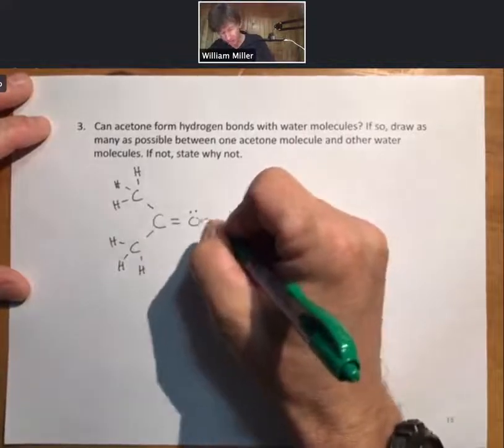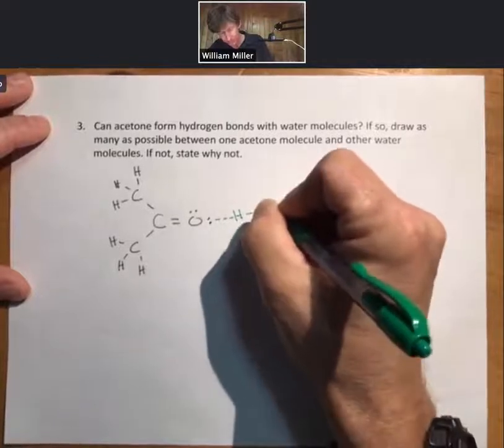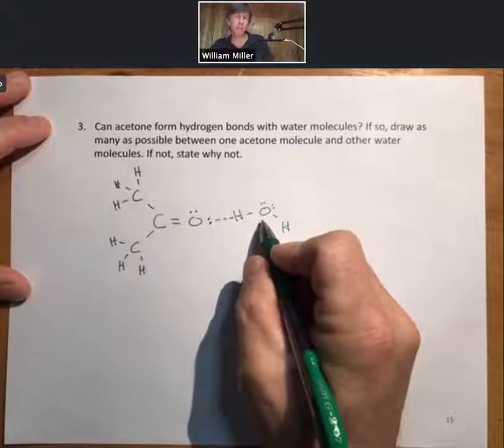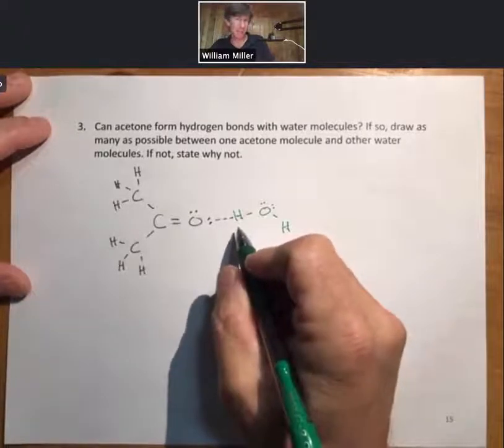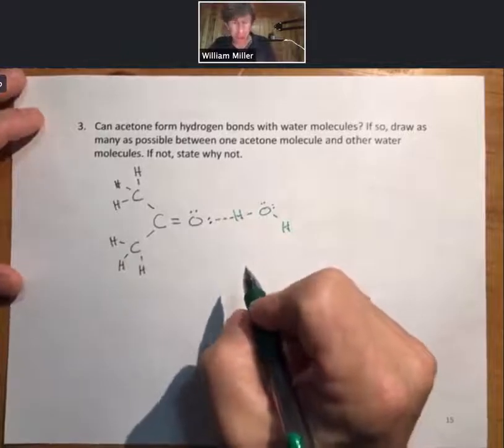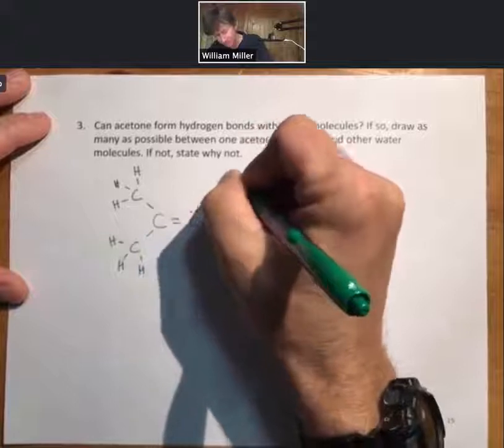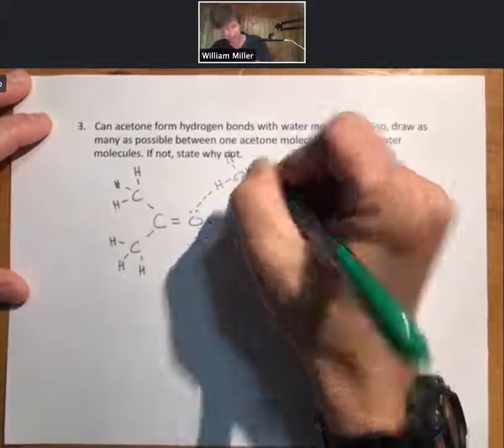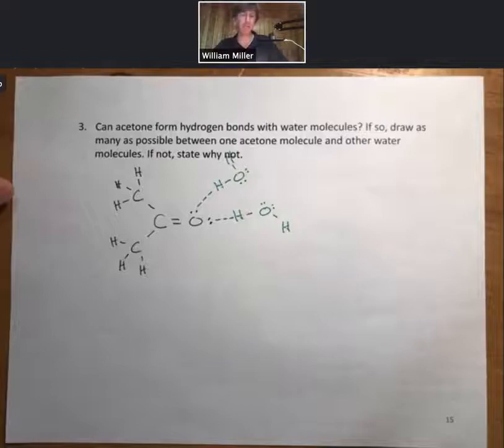And water does have hydrogen covalently bonded to oxygens. Therefore, the answer is yes, hydrogen bonds can occur. And now we'll draw both of the possibilities. Those are the only two hydrogen bonds that can occur for this, from acetone to water.